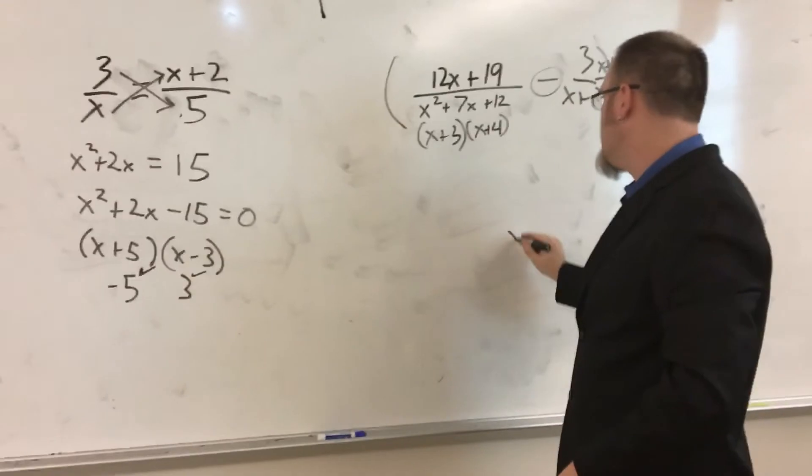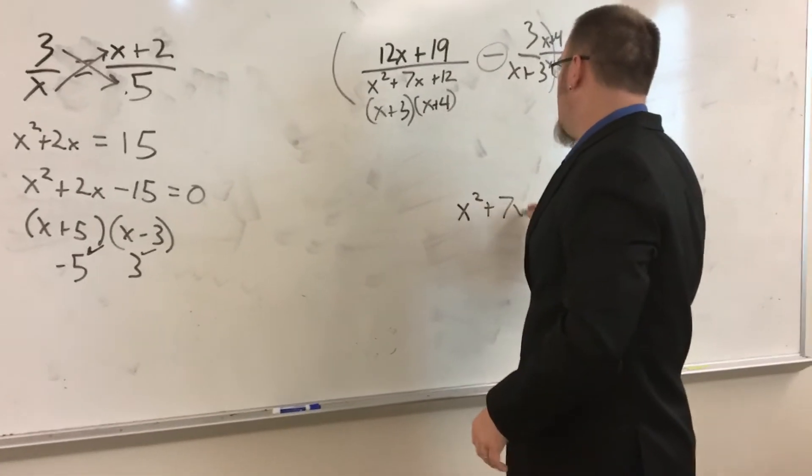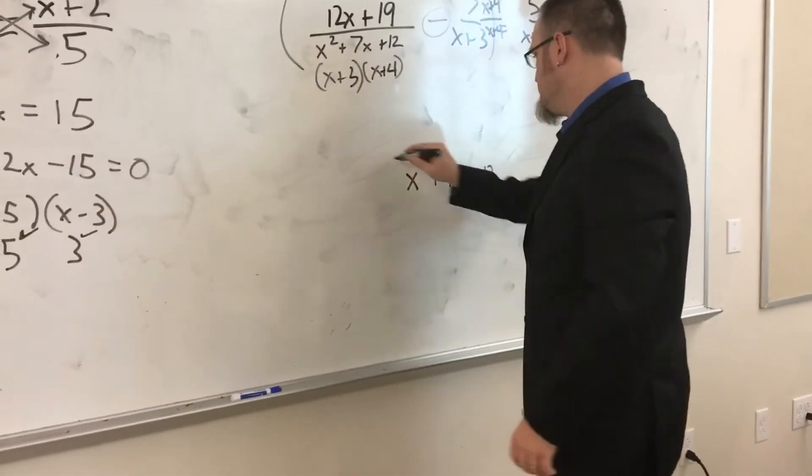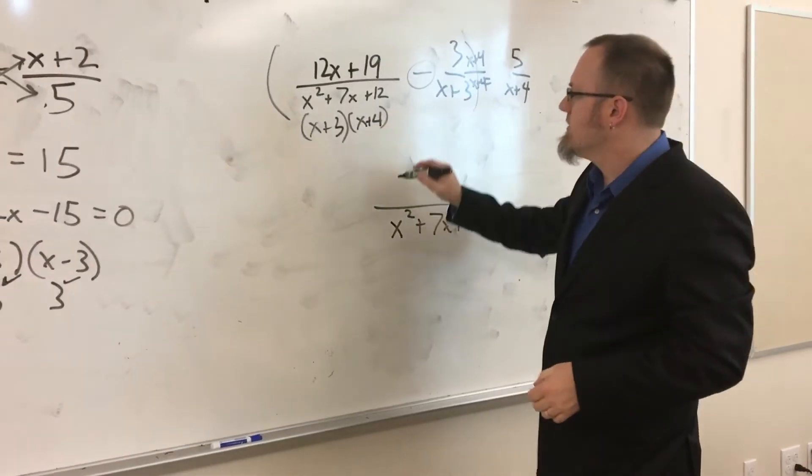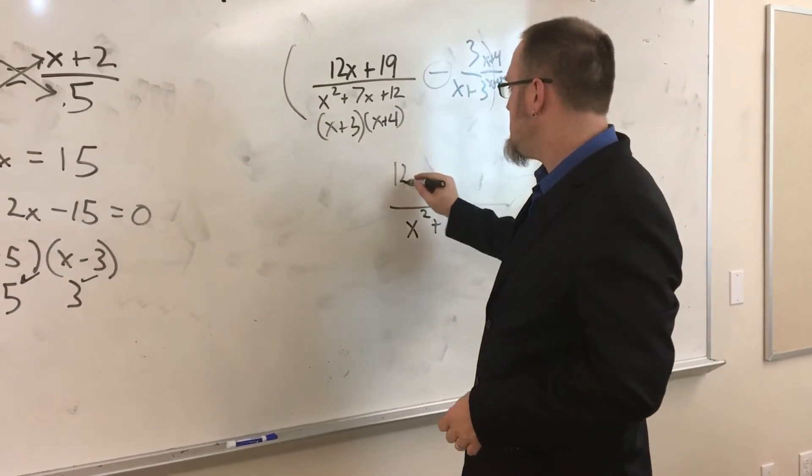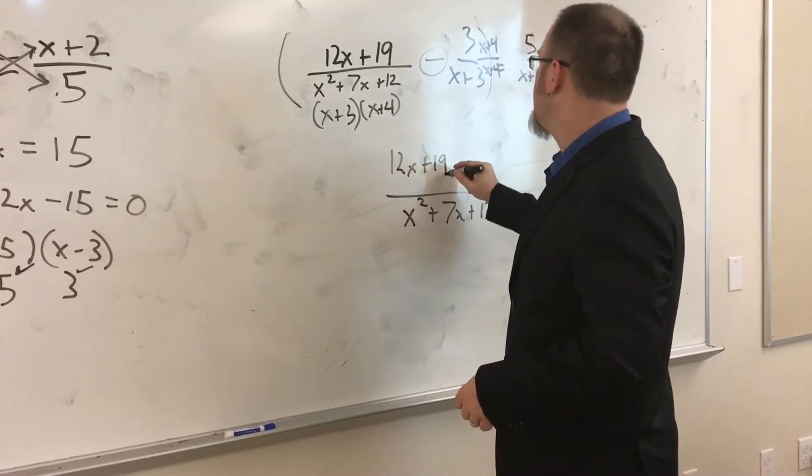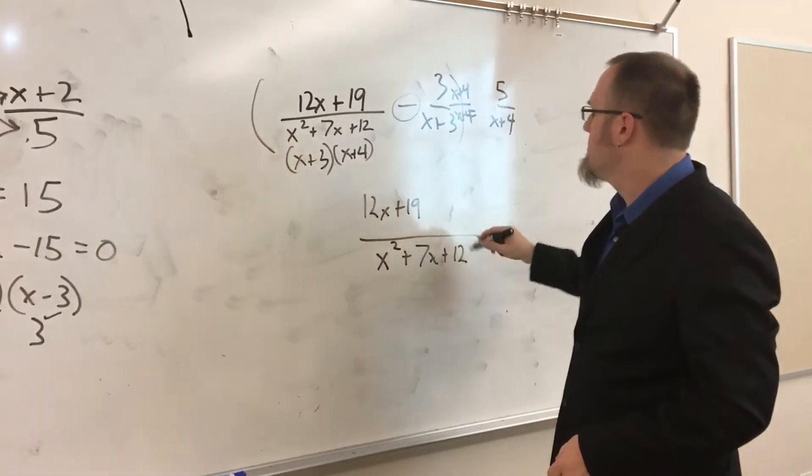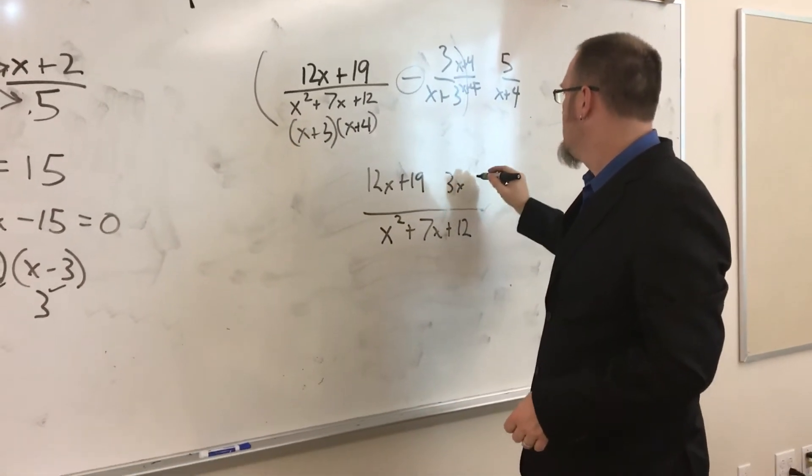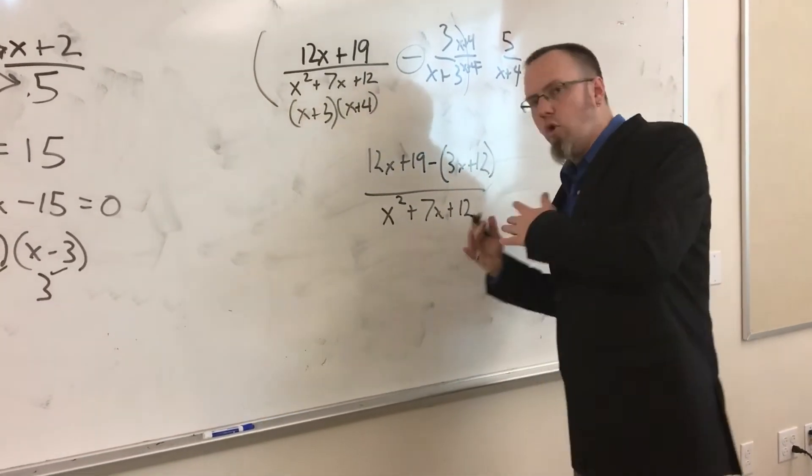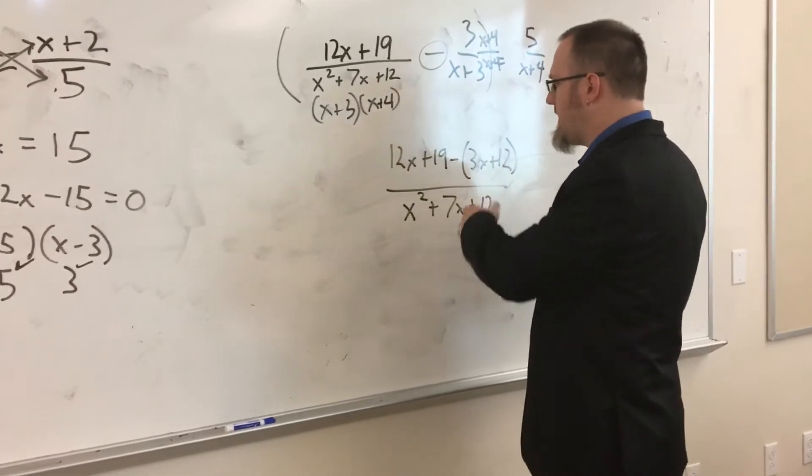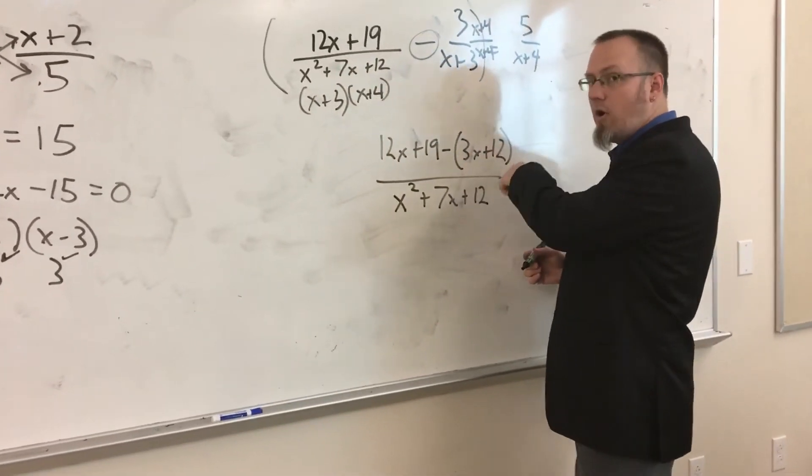We don't have to multiply by anything on this side, but on this side, we're going to need to multiply by (x+4) over (x+4). So that will give us this same on the bottom. So I'm going to go ahead and write that down, kind of down here, x²+7x+12, and that's going to be the bottom part of my fraction. For the top part of this, I've got 12x+19, and then the 3 times (x+4) is 3x+12. I'm subtracting that whole thing.